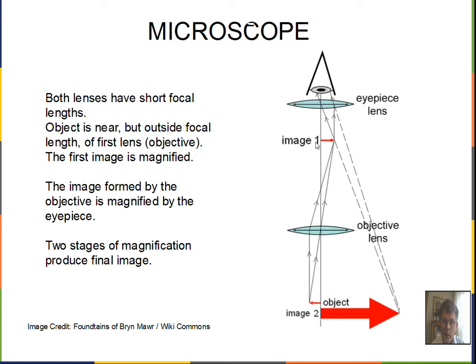Where should this first image be located compared to the focal point of the eyepiece lens in order for this eyepiece lens to act as a simple magnifier? You can see the orientation of image one and image two are the same. The eyepiece is acting as a simple magnifier. Image one is slightly inside the focal point of the eyepiece lens.